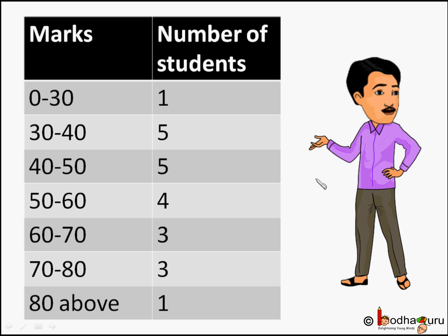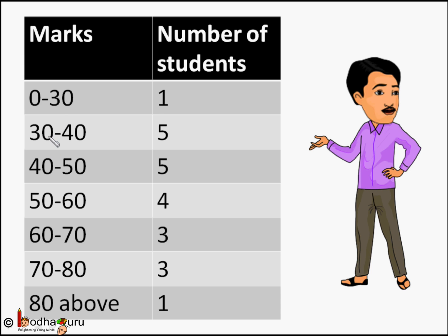Now you must be wondering — I can see 30 in both '0 to 30' as well as '30 to 40'. What if someone gets 30 marks? Do they go in the 0 to 30 group or the 30 to 40 group? They will go in the 30 to 40 group — the higher one.